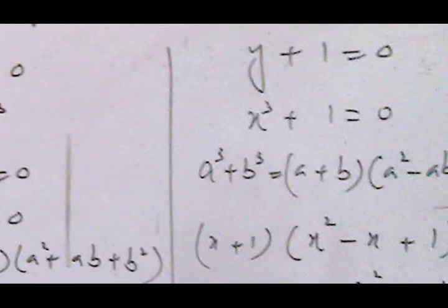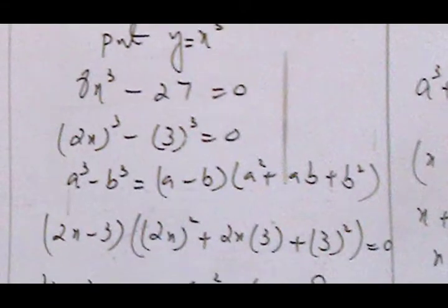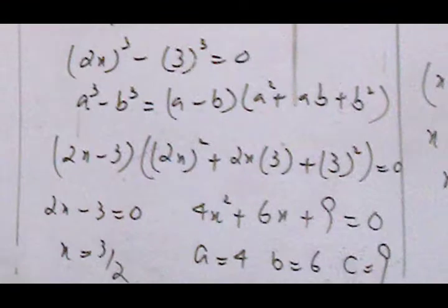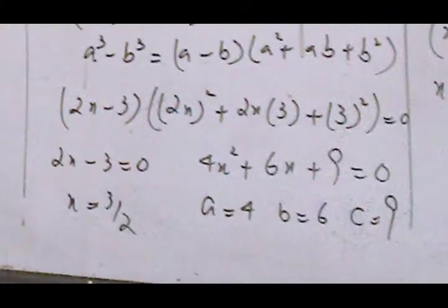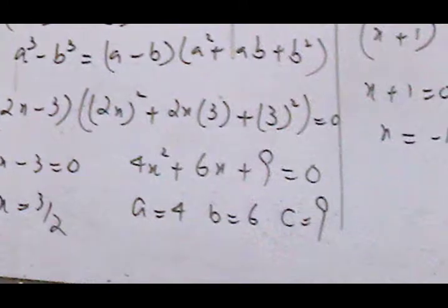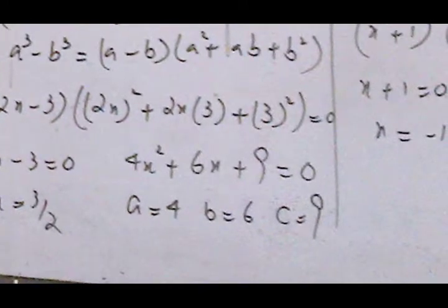Since y equals x³, it becomes a cubic equation. We apply the formula a³ minus b³ equals (a minus b)(a² plus ab plus b²). One factor gives a linear equation, x equals 3/2, and the other gives a quadratic which we solve by the quadratic formula using values of a, b, and c.